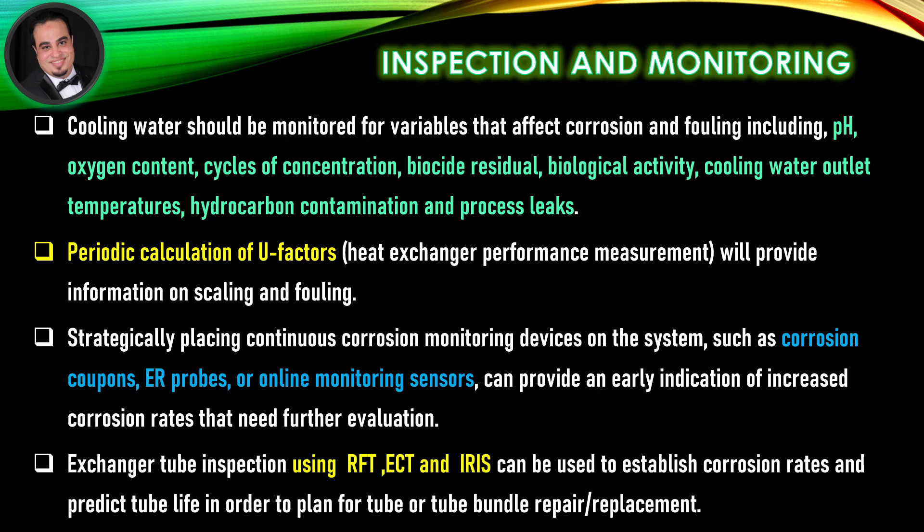Strategically placing continuous corrosion monitoring devices on the system — such as corrosion coupons, ER probes, or online monitoring sensors — can provide an early indication of increased corrosion rates that need further evaluation. Exchanger tube inspection using Remote Field EDI current testing and Internal Rotary Inspection System can be used to establish corrosion rates and predict tube life, in order to plan for tube or tube bundle repair or replacement.